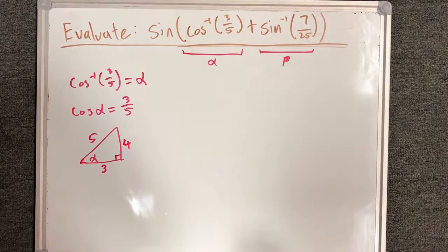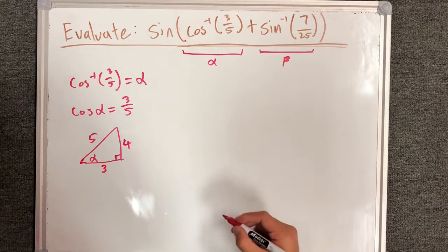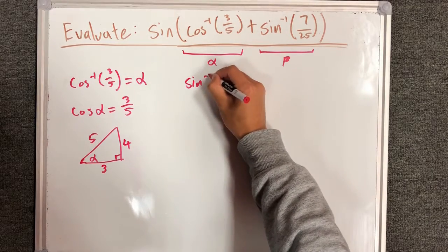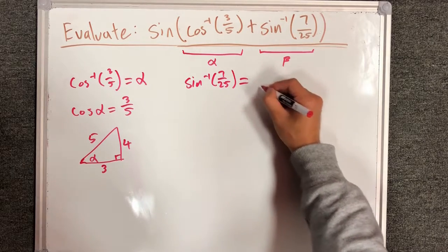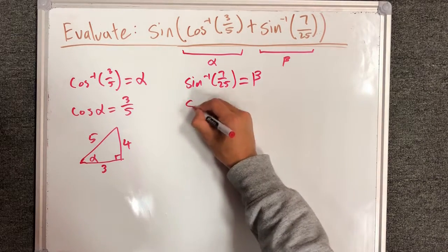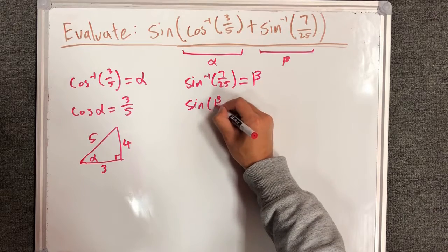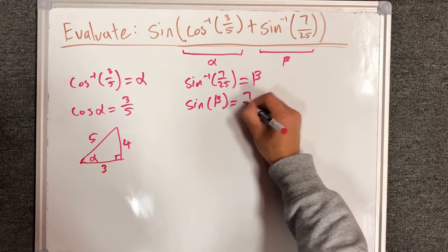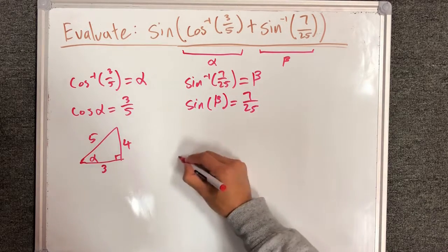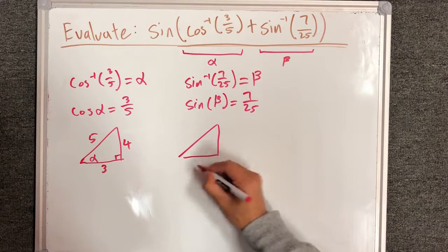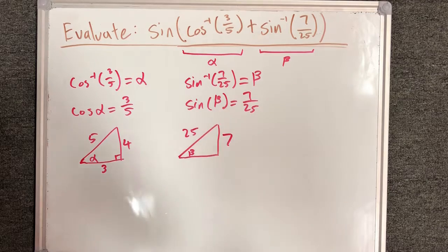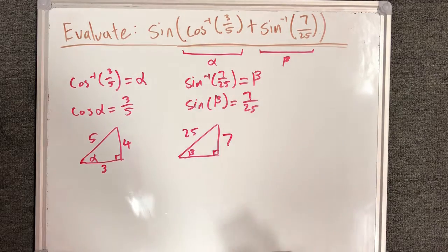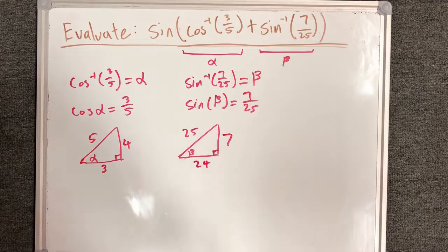It's a 3, 4, 5 triangle. Sine inverse of 7 over 25 tells us that sine inverse of 7 over 25 equals beta, and so sine of beta equals 7 over 25. The corresponding triangle for this looks like this. The opposite is 7, the hypotenuse is 25, and if you know your Pythagorean triples, this third length is 24.